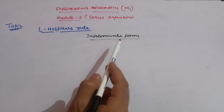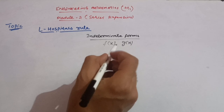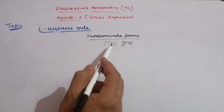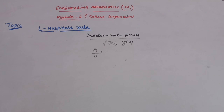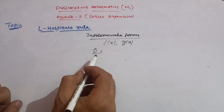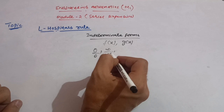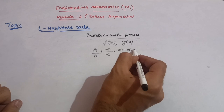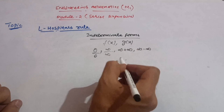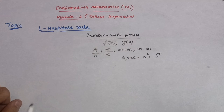Let us first discuss what indeterminate forms are. Suppose we have two functions, f(x) and g(x). If their limits cannot be determined, those are called indeterminate forms. For example: zero by zero — anything divided by zero is not defined. Next is infinity upon infinity. Then infinity plus infinity, infinity minus infinity, zero into infinity, zero raised to the power zero, and one raised to the power infinity. These are the indeterminate forms.